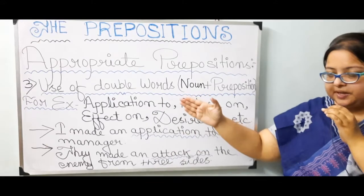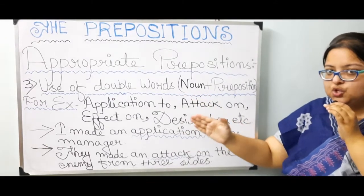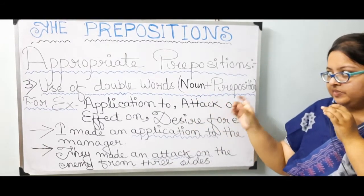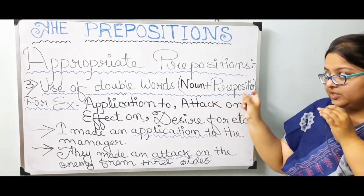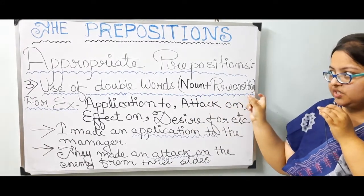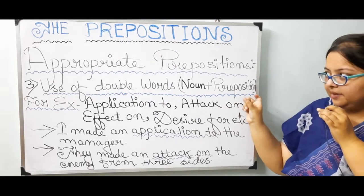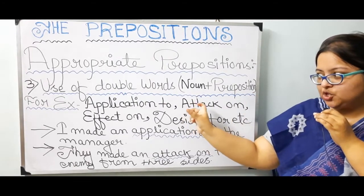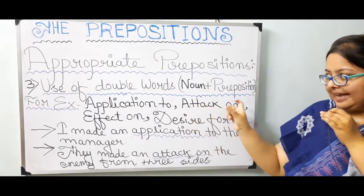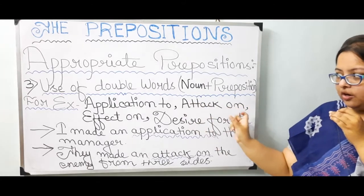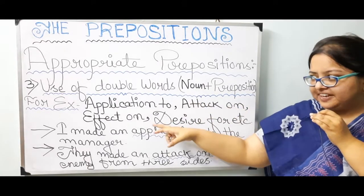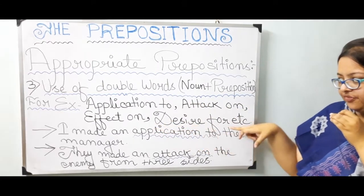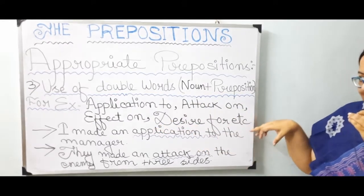Number 3: the use of double words — noun plus preposition. For example: application to, attack on, effect on, desire for, etc.